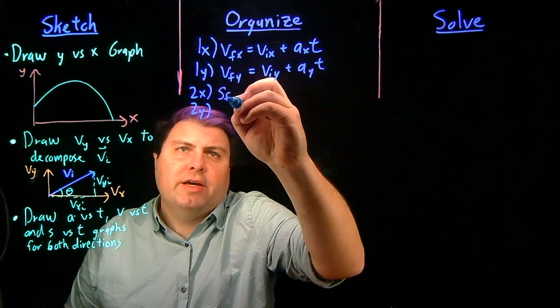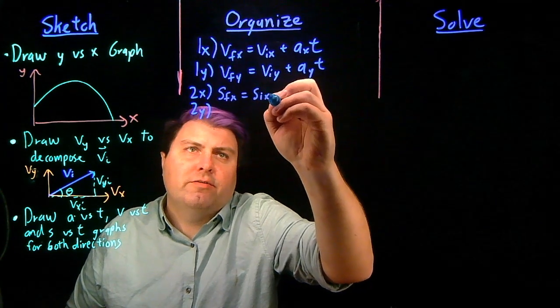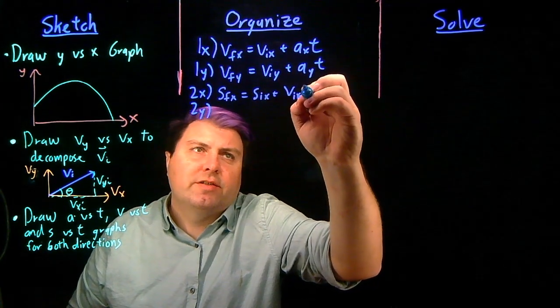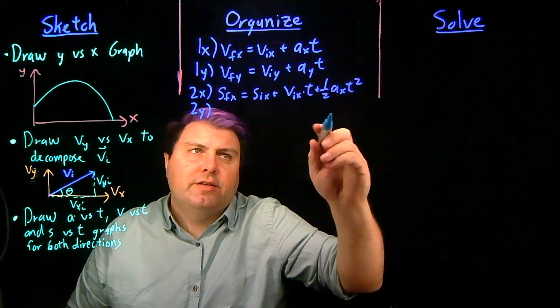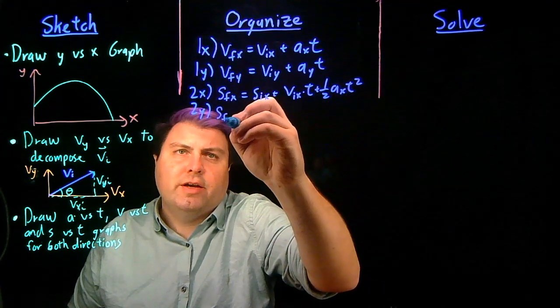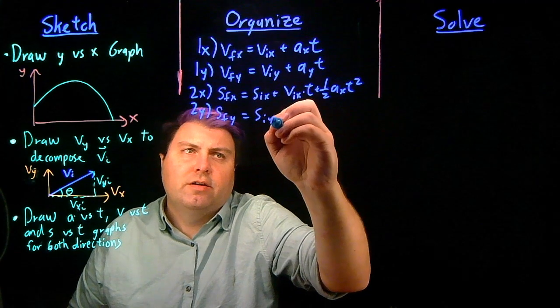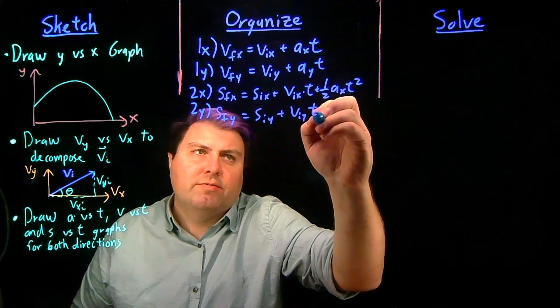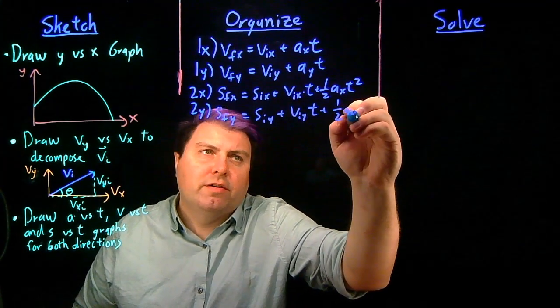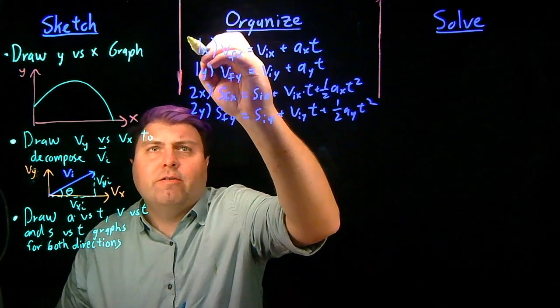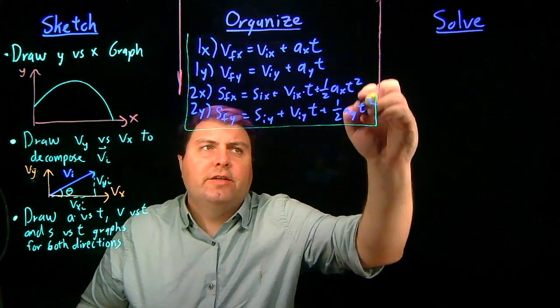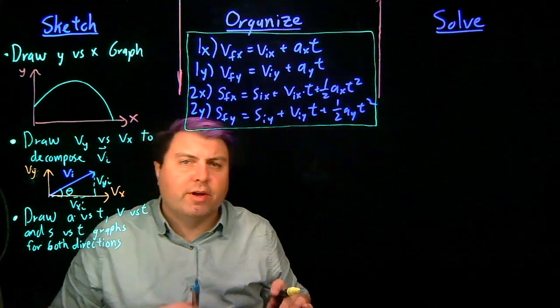2 in the x is going to be sfx equals six plus vix times time plus 1 half ax t squared. And 2 in the y, sfy equals siy plus viy times time plus 1 half ay t squared. So we want to always have these equations at hand and able to manipulate.